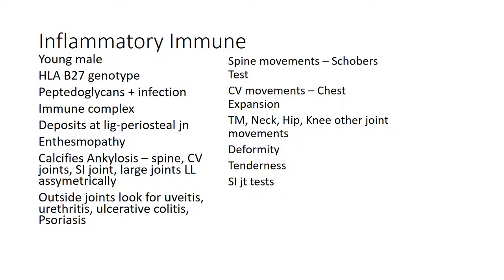The costovertebral joint leads to reduced chest expansion. The sacroiliac joint and large joints of the lower limb are also involved, usually asymmetrically. Outside the joint, always look for uveitis with arthritis — Reiter syndrome. Also look for ulcerative colitis, called enteropathic arthritis, and psoriasis, which gives psoriatic arthritis.